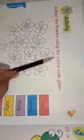Write down the correct number. Okay, now let's see the next page. This is an activity: color the flowers using the color code.